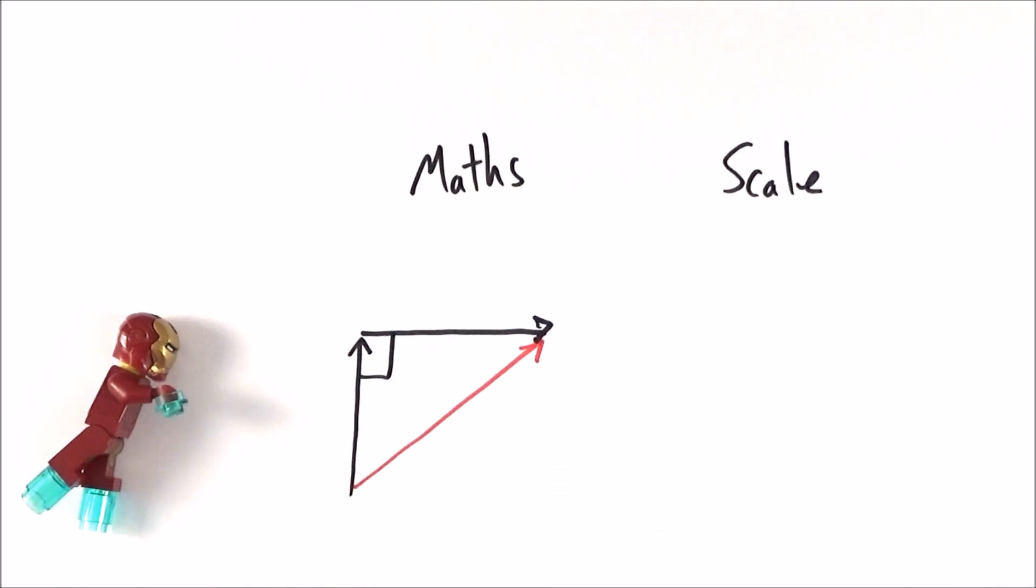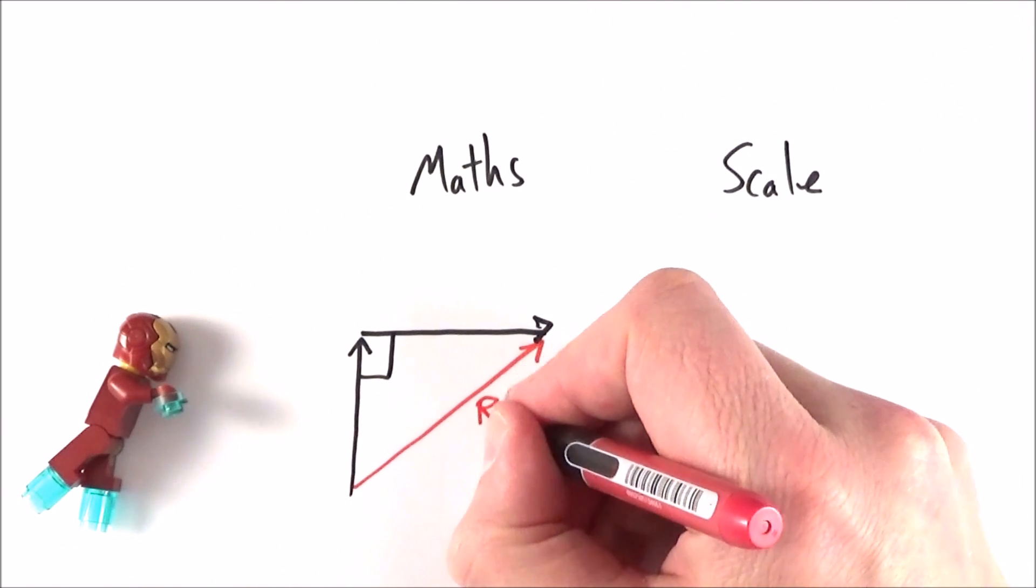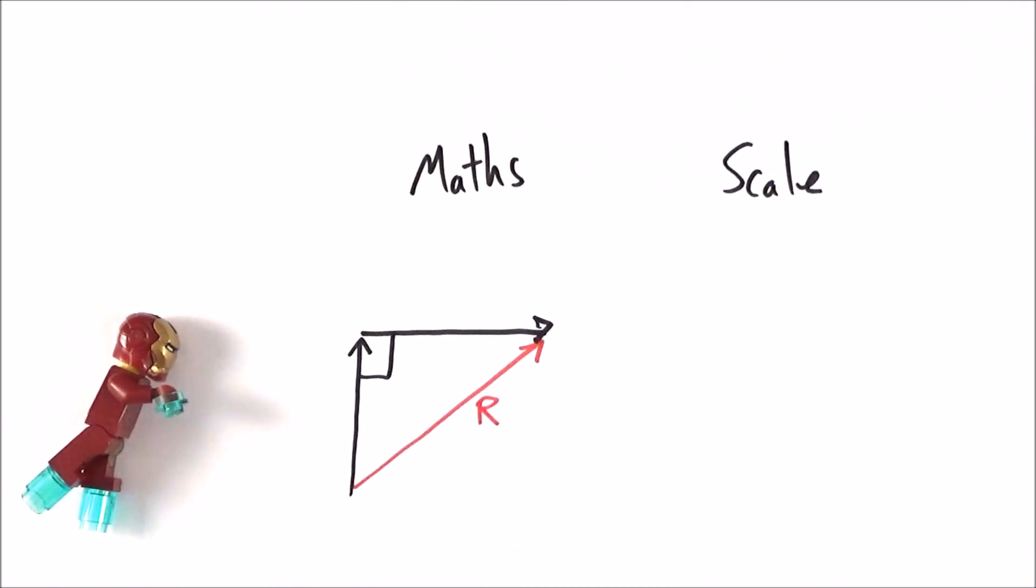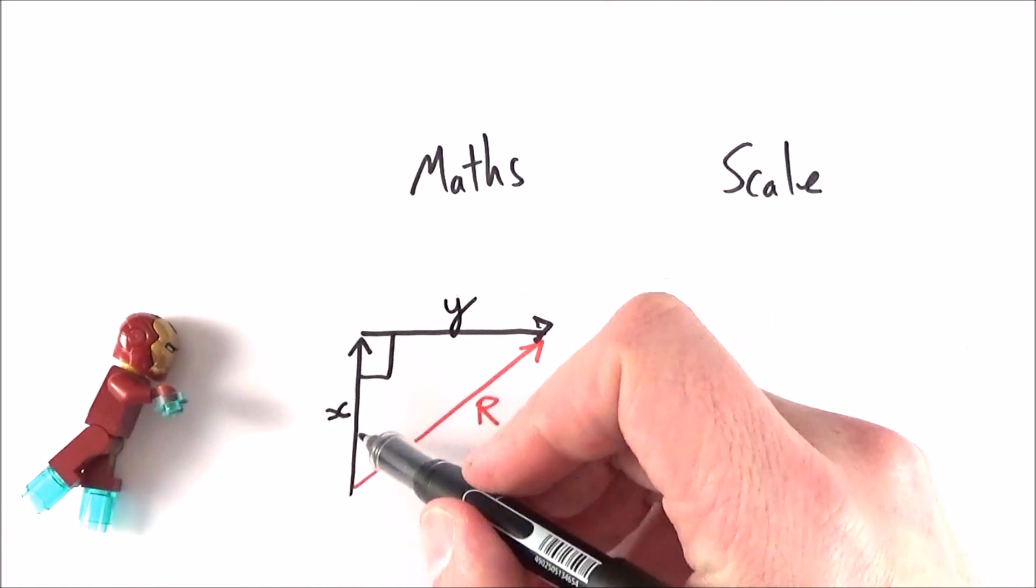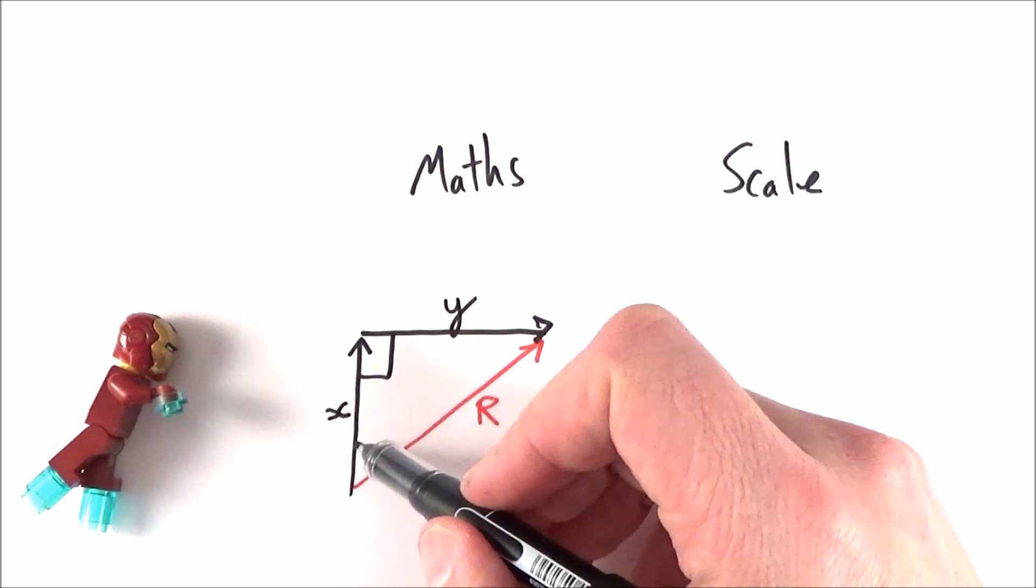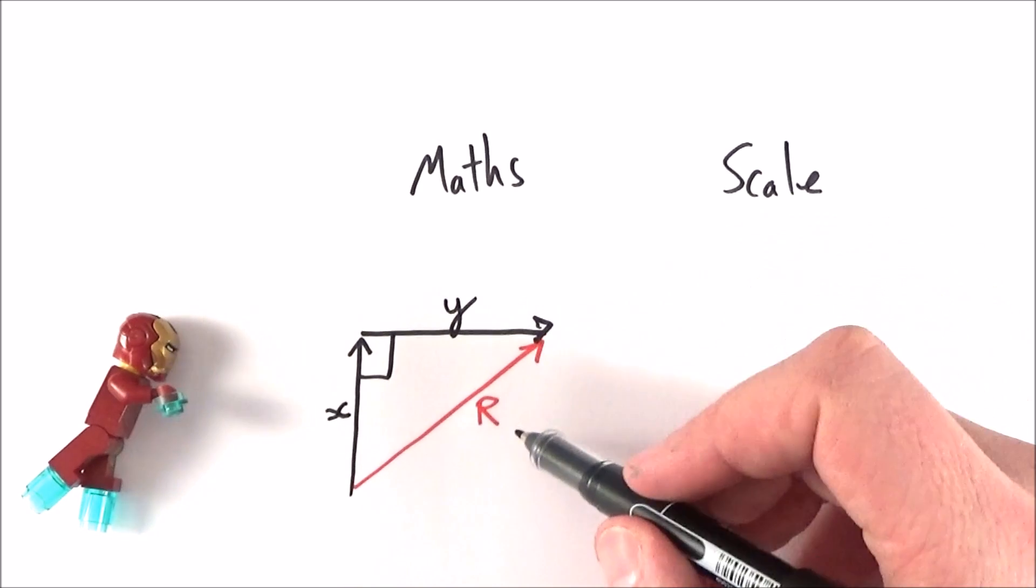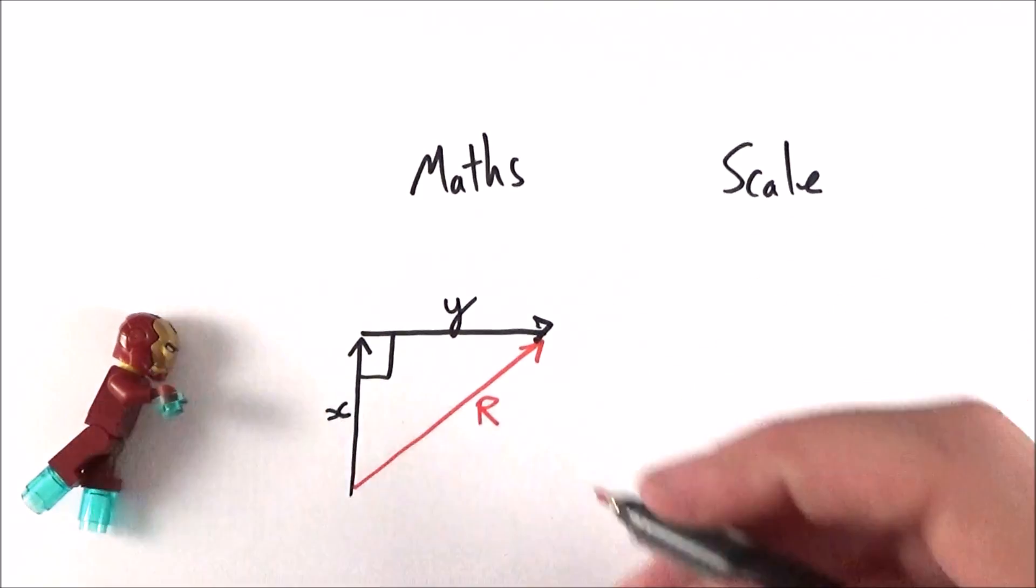Now to find the distance here, I'm going to call this resultant vector r, and perhaps we have a distance of vector x up and y across. So this could be maybe velocity, it could be the force of an object. To find out the resultant r, we can use Pythagoras.